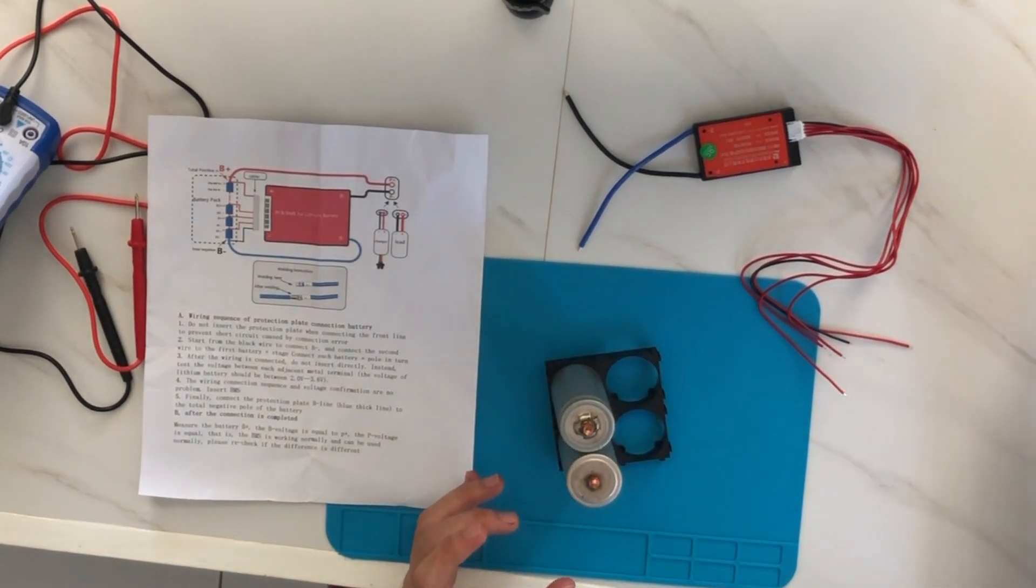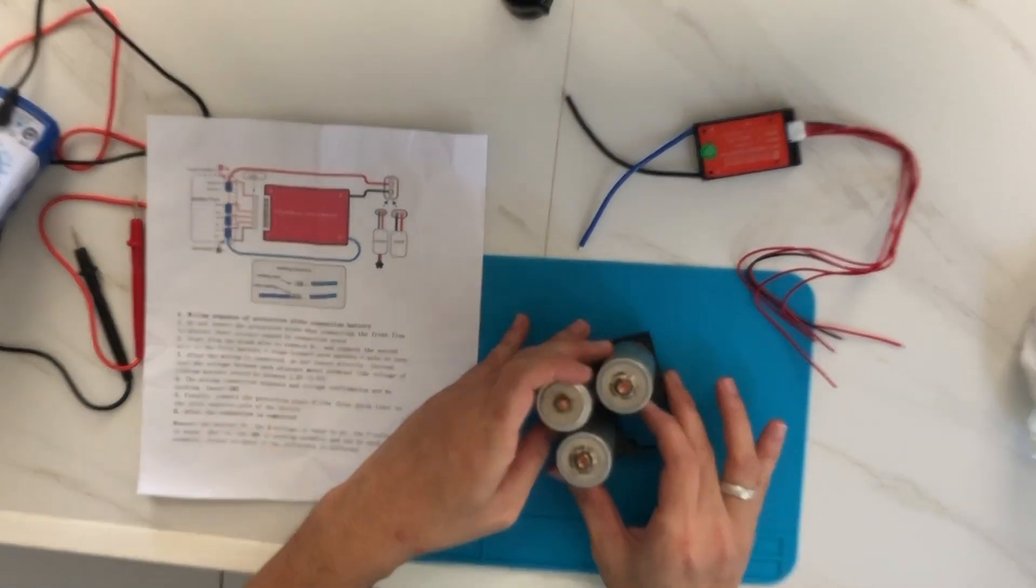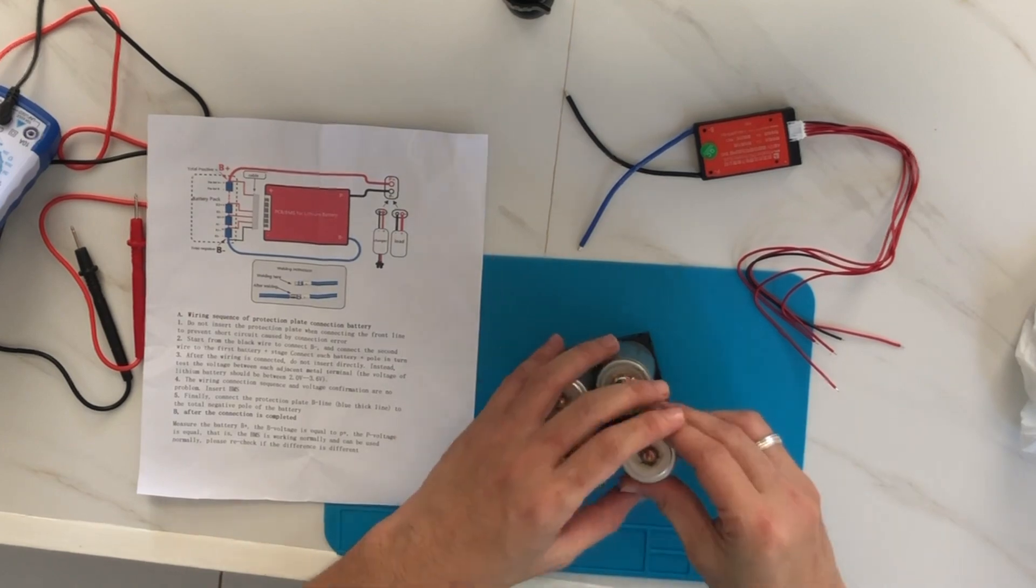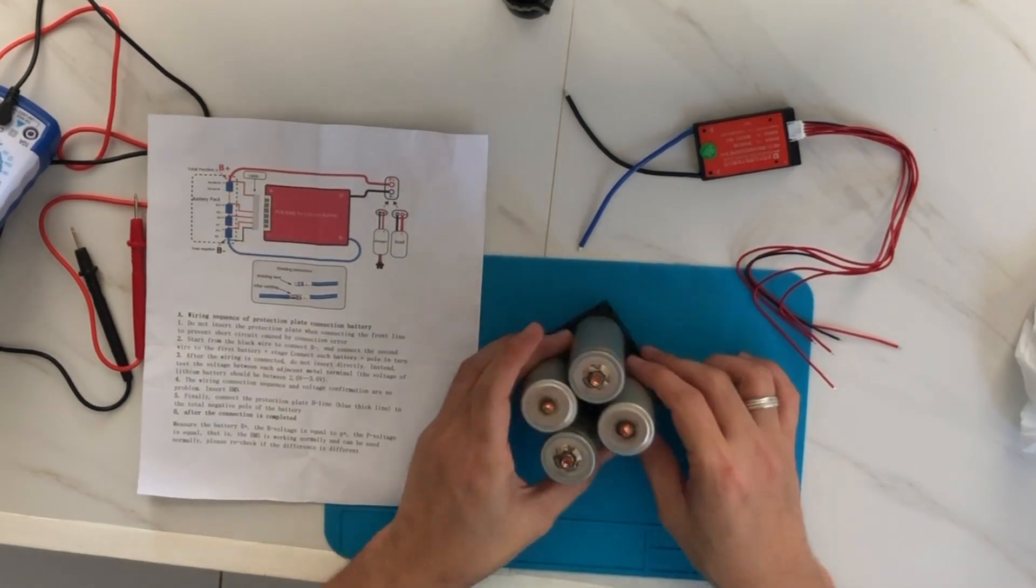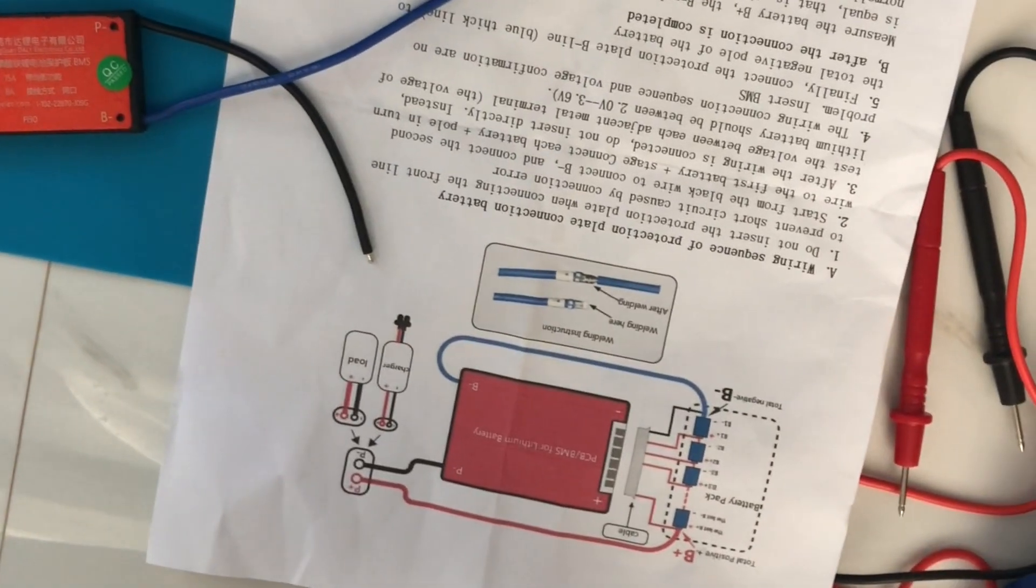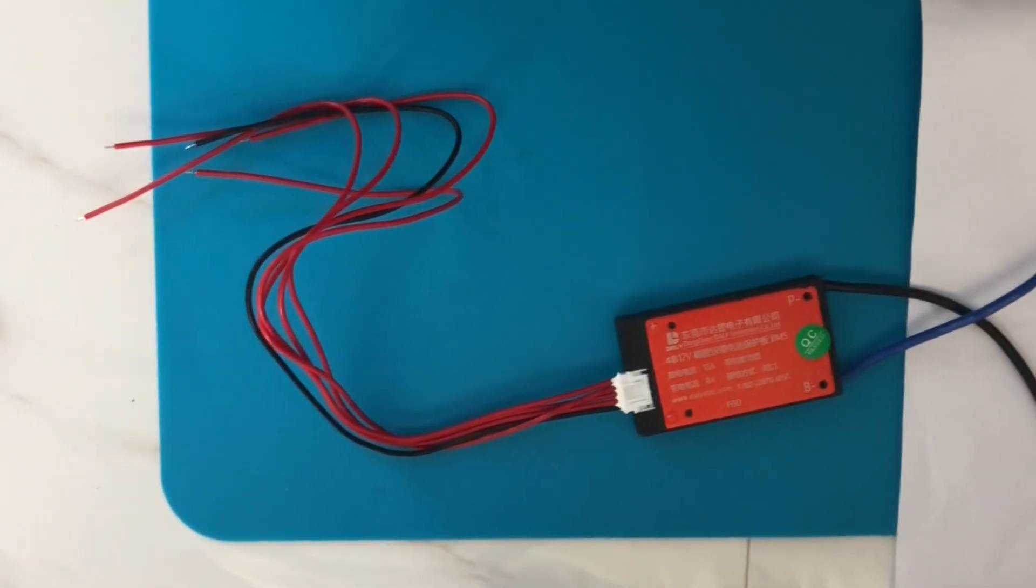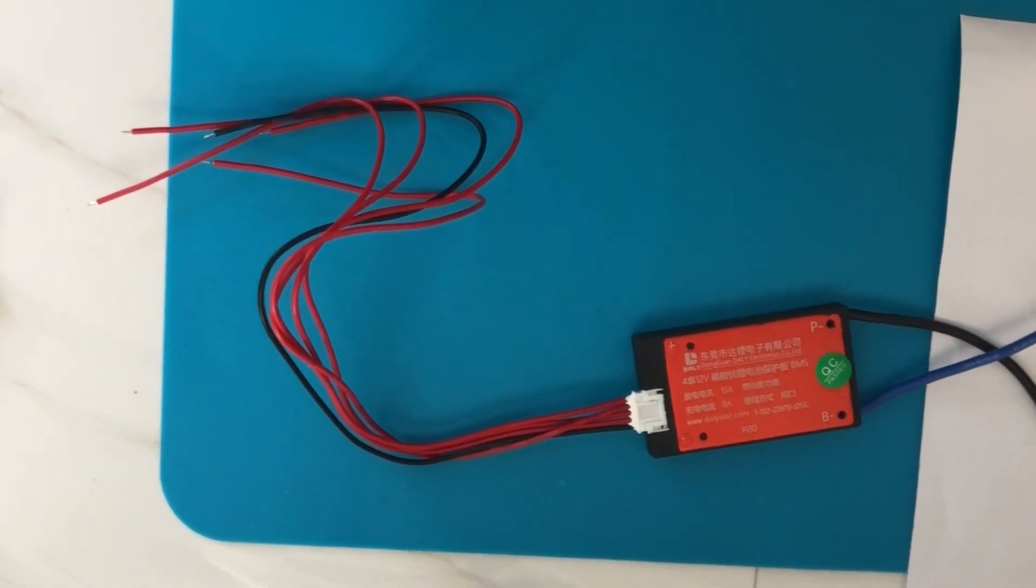Since we have the same ratings, we'll install a BMS or a battery management system which will protect our battery from overcharging and will do the balancing using this second component. Alright, for the BMS. This is a 4S BMS with 15 amp maximum rating. I think this is enough to handle these four lithium batteries.